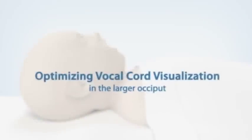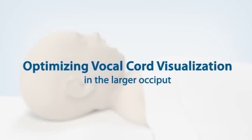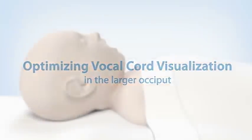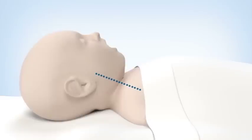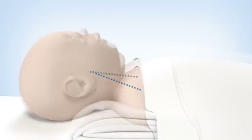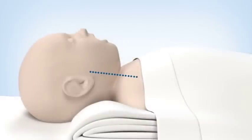Proper alignment of the infant patient is another important tip that may help with visualization of the vocal cords. The placement of a shoulder roll provides better alignment in the infant patient, which tends to have a larger occiput. The shoulder roll creates a slight extension, but not hyperextension, of the neck to help facilitate visualization of the cords.